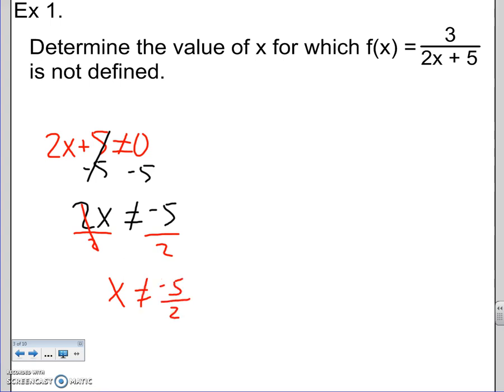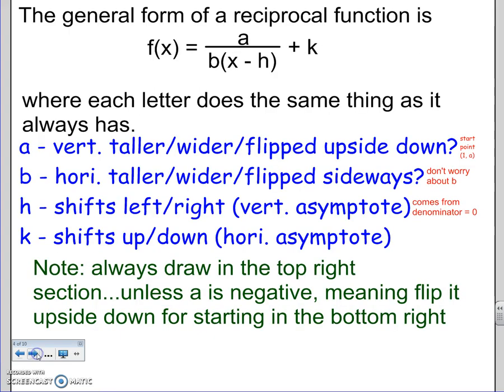x cannot be negative five over two. Alright, our trick still works from before. Just change the sign, and there's something next to x divided by it. So negative five, then five over two.